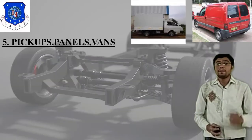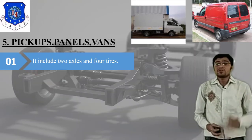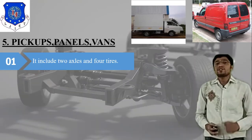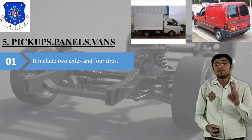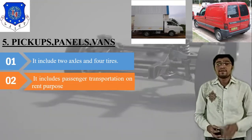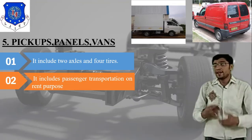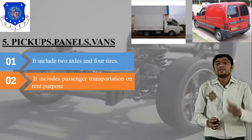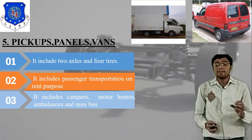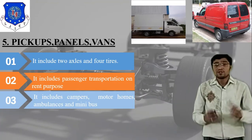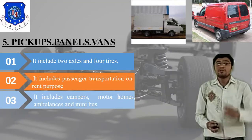The fifth type is pickup panel van. Its objectives: it has only 2 axles and 4 tires. It includes passenger transportation for rent purposes — for example, ambulance. It also includes campers, motorhomes, ambulances, and minibuses. This is the concept of pickup panel van.